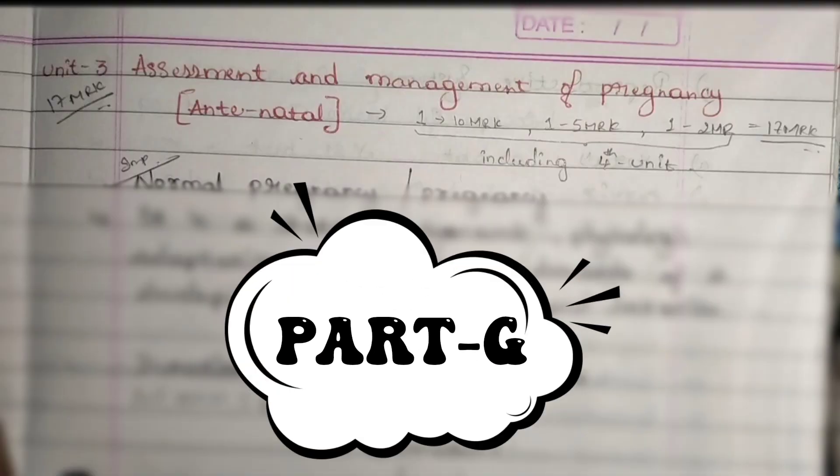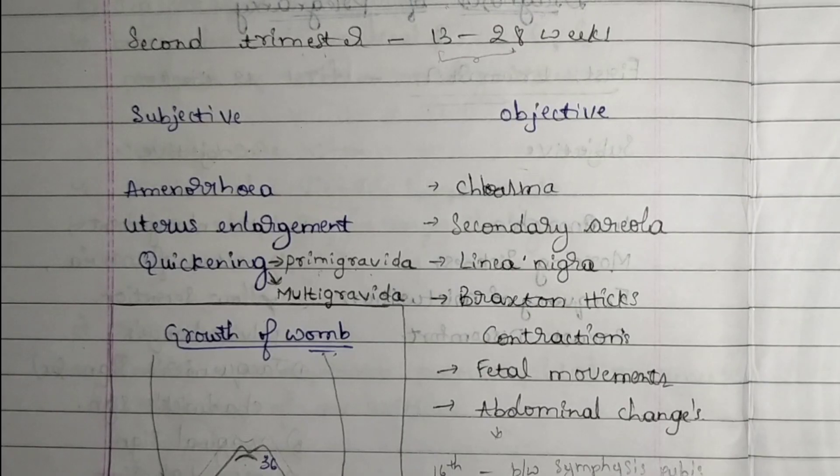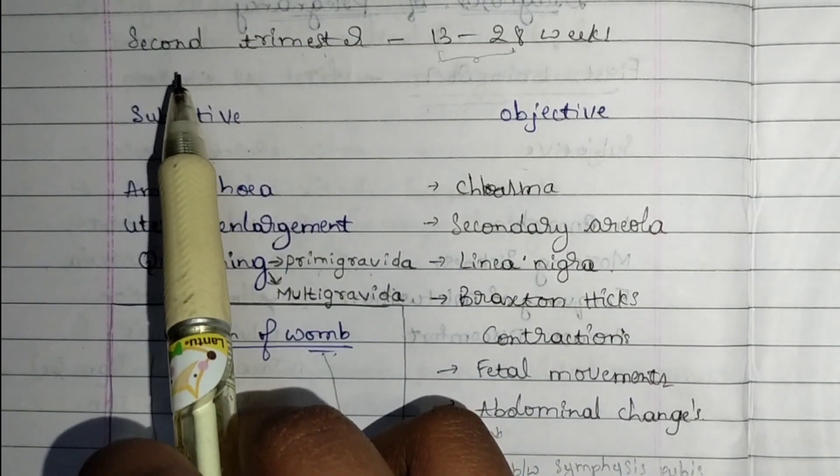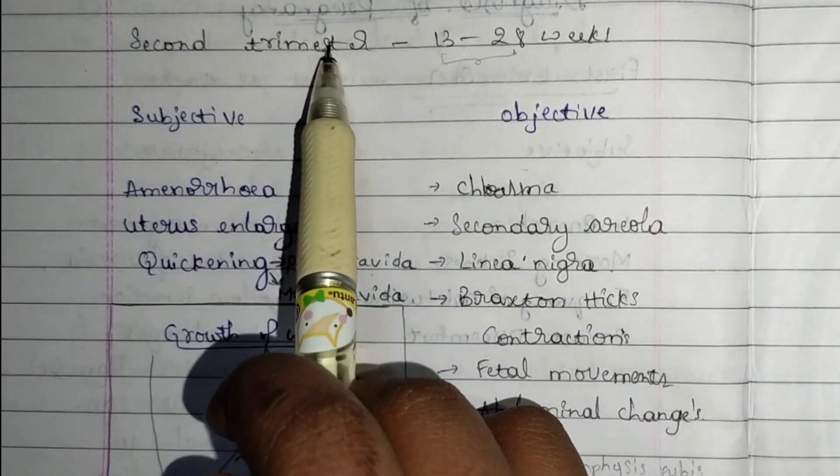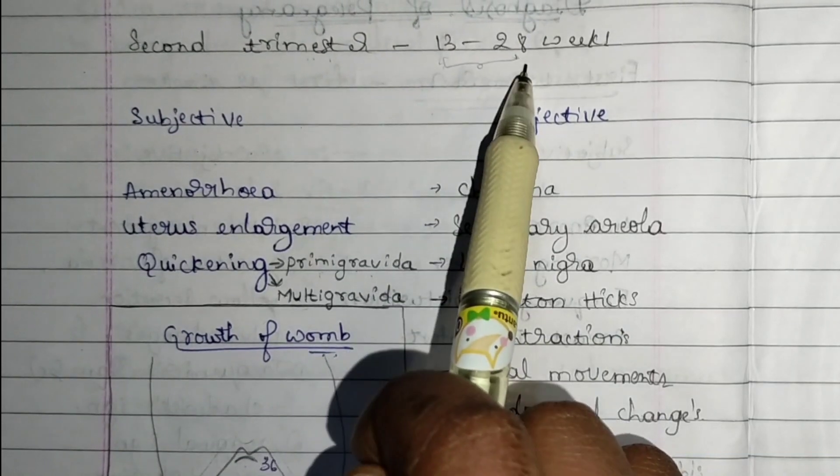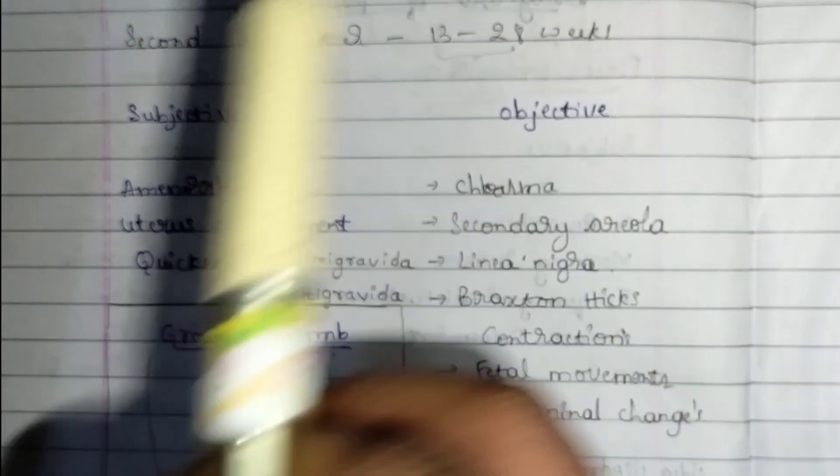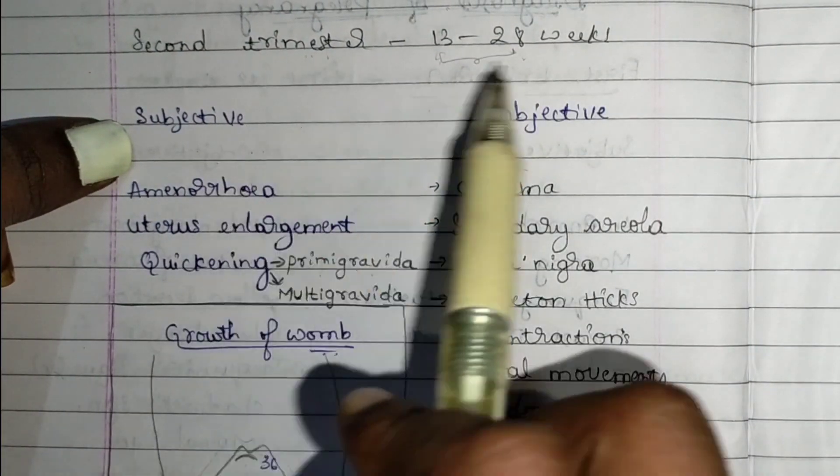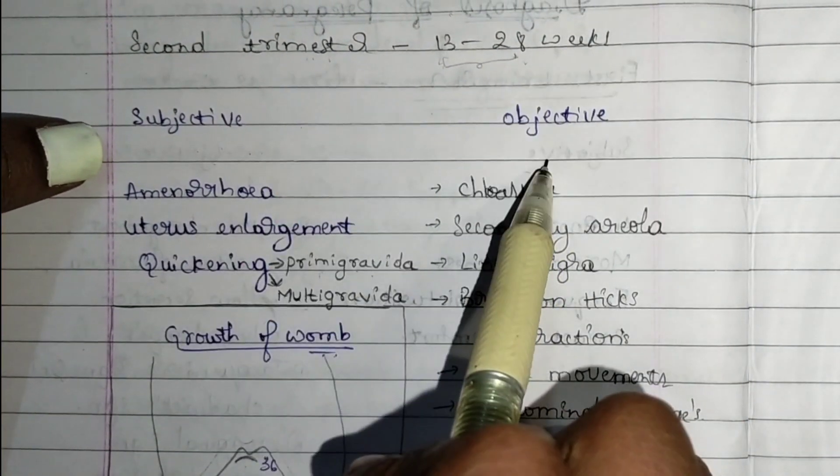Hello guys, today's topic is diagnosis of pregnancy in second trimester. Second trimester includes 13 to 28 weeks, which is from third month to sixth month. It includes subjective and objective data.